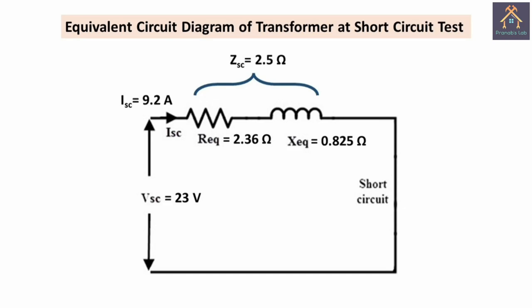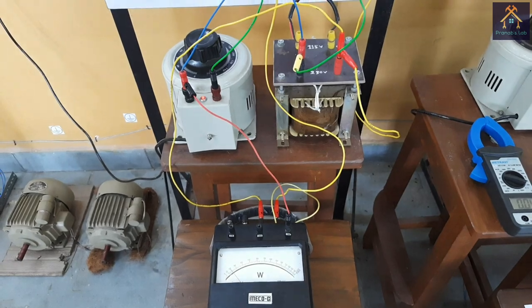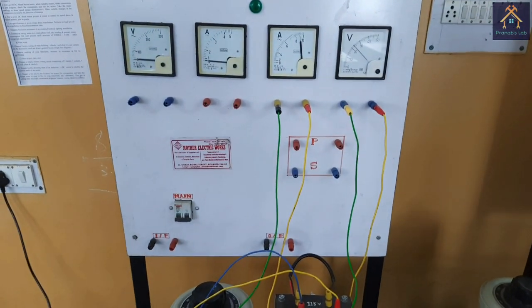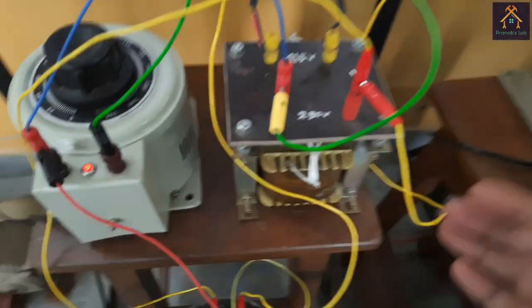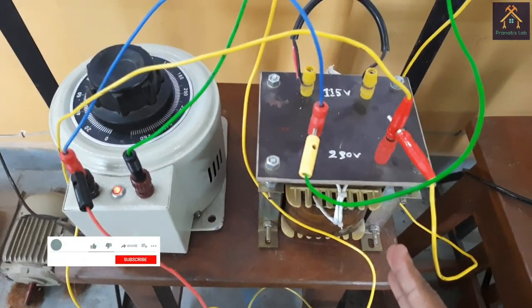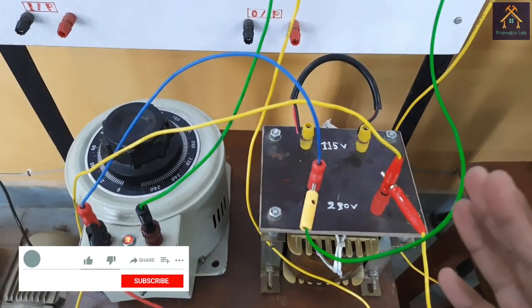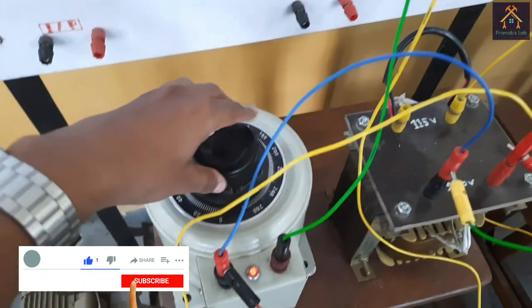This is the equivalent circuit diagram of the transformer at the short circuit test. This circuit contains only the total equivalent resistance referred to primary, the total equivalent reactance referred to primary, and the combination of these two is the short circuit impedance. This experiment is now performed, and the transformer is very hot, so we have to handle it with care. Now let's reduce the voltage and switch off the supply.